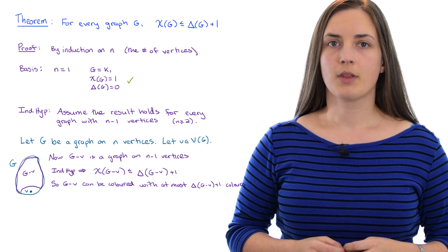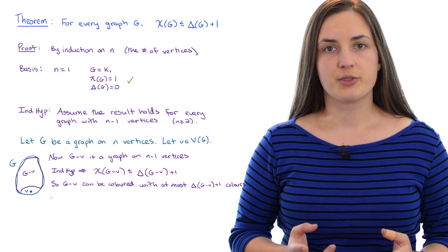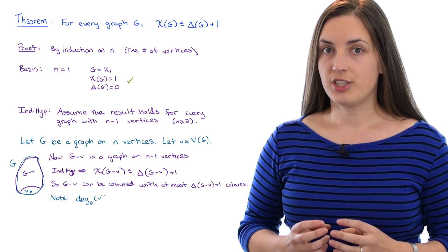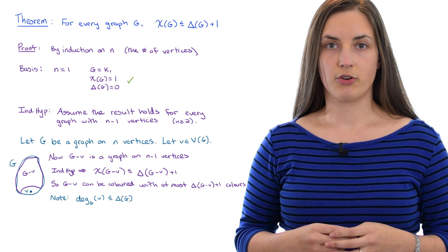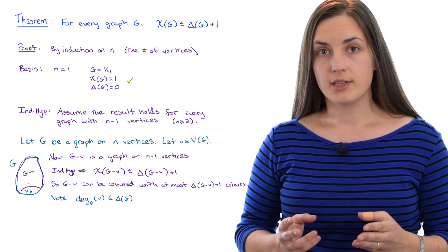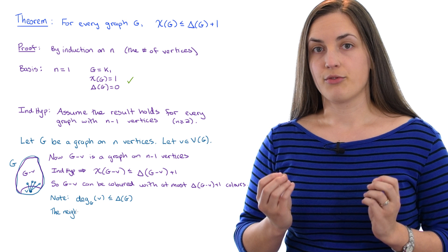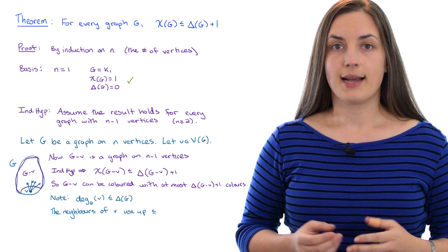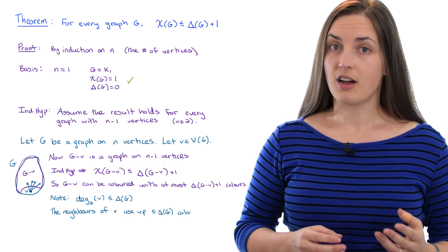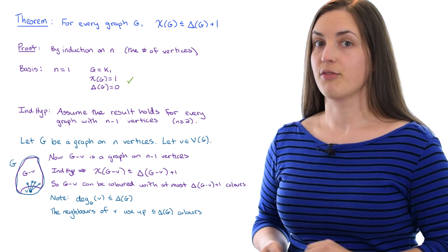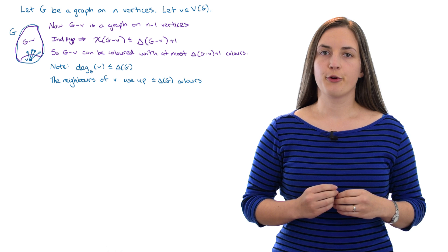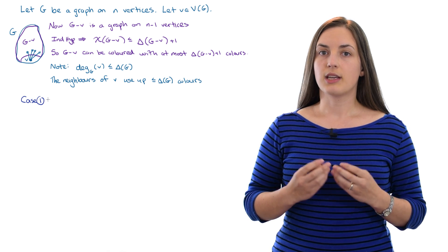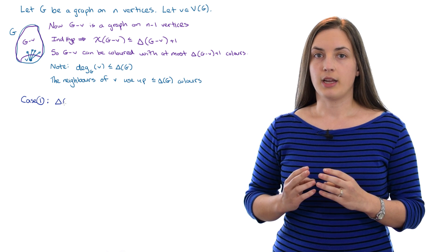We should observe that the degree of vertex V in the graph G is at most the maximum degree of G. So in particular, the neighbors of vertex V can use up at most the maximum degree of G colors in the coloring that we had of the smaller graph. Now our proof splits up into two cases.